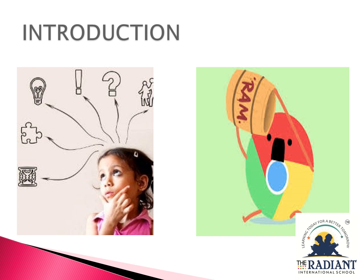But human beings forget some information. For example, if I give you some tasks today and ask you about the same task after one month, definitely you will forget. Human beings have this disadvantage — we cannot remember for a long period of time. But a computer can do so. Computer can remember information for a long period of time and we can retrieve that information whenever we want.